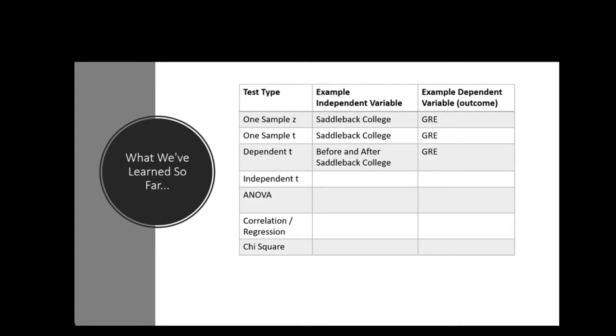For the independent t perhaps you can guess what I would do. I would have to be looking at two different conditions. So perhaps I would say Saddleback College versus Irvine Valley College and see how they differ on their performance on the GRE. If I was going to do an ANOVA perhaps I would do Saddleback College versus IVC versus Orange Coast College and see how they differ on their GRE performance. For correlation regression I can't lump Saddleback College and IVC anymore because those are nominal variables. Correlation regression requires they'd both be ratio. So maybe I would look at the number of units students take and see how that predicts their GRE score.